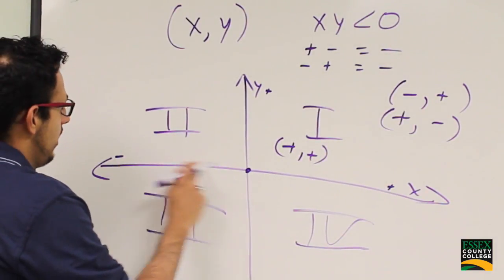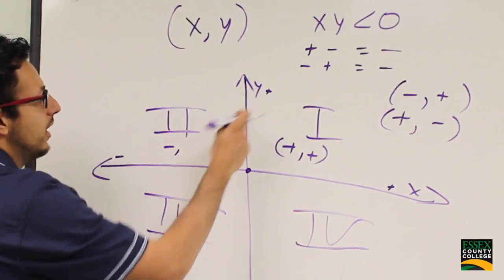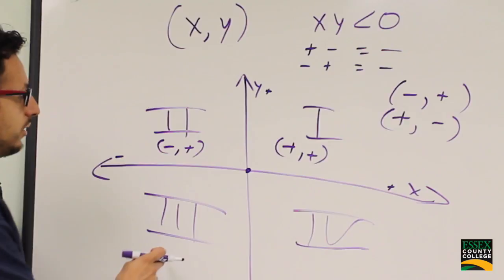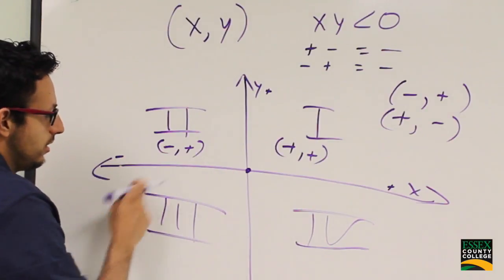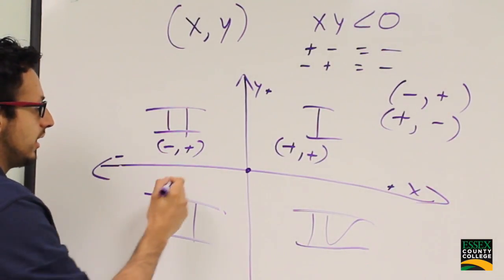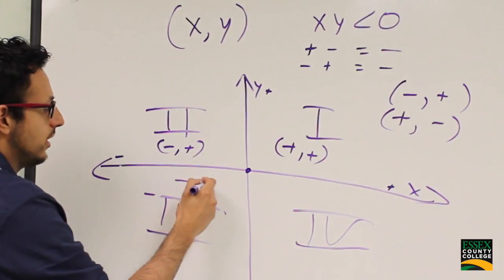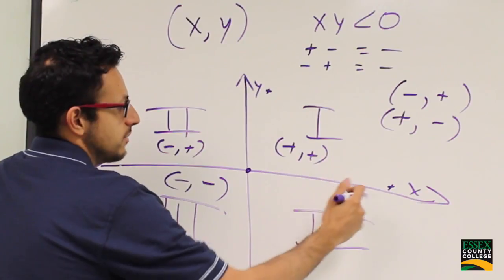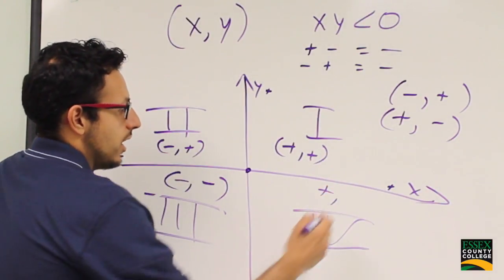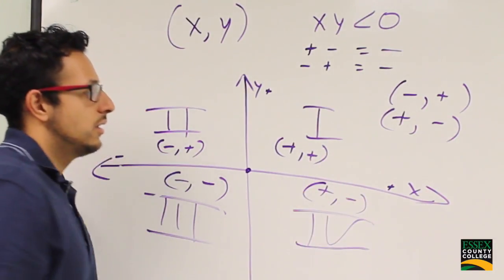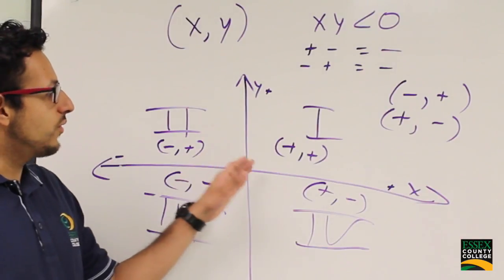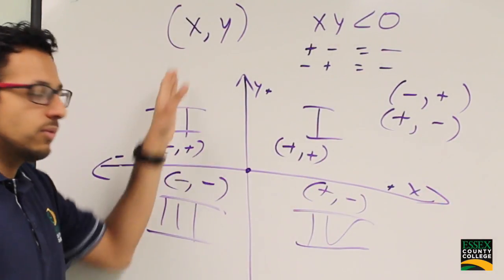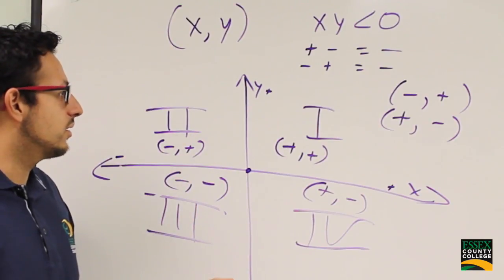In the second quadrant, x is negative but y is positive. In the third quadrant, x is negative and y is also negative. In the fourth quadrant, x is positive and y is negative. Always remember x goes first, so we determine x first and then go either up or down to determine y.